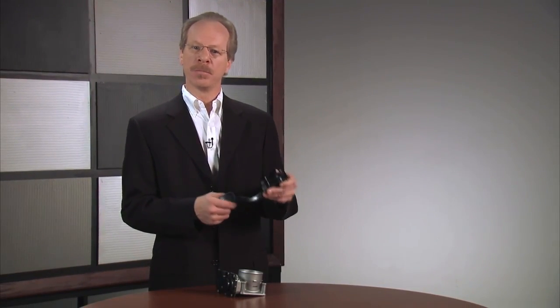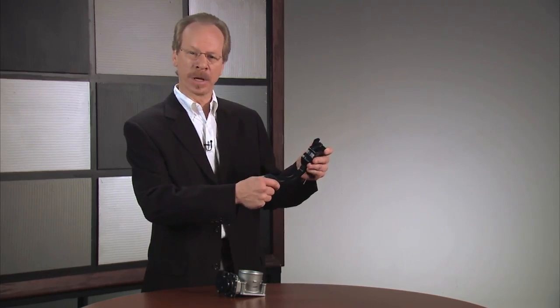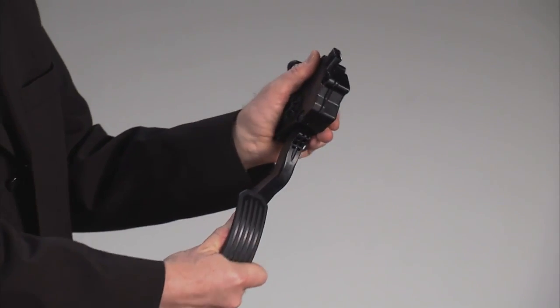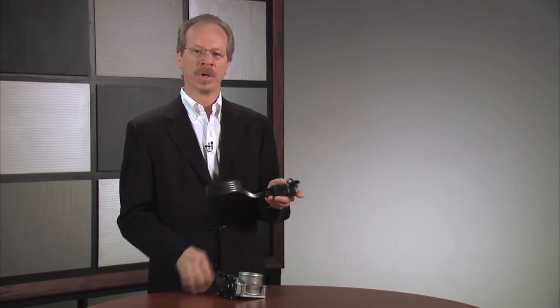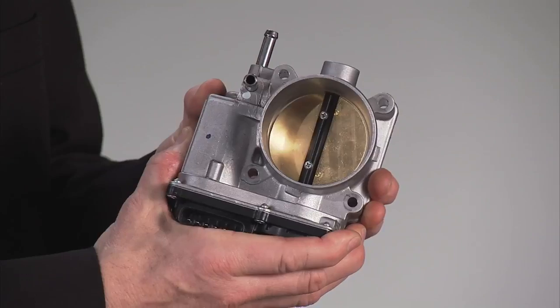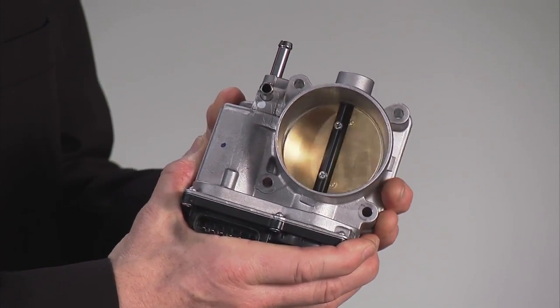Cars used to have carburetors, where a mechanical pedal below your foot controlled the carburetor on the engine. But modern vehicles use an electronic throttle control system. The accelerator pedal now gives an electrical signal of how far you've depressed it to an engine management computer. The computer then controls an electronic throttle on the engine to determine how much air enters the engine, and therefore how much power the engine produces.